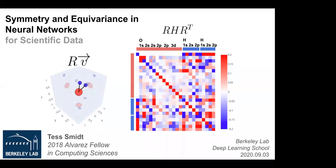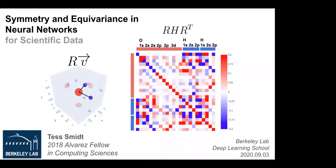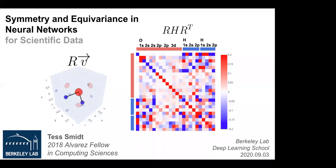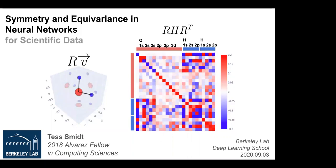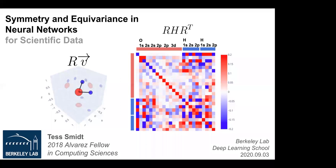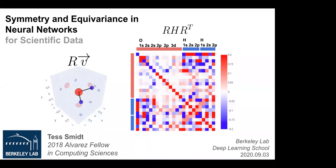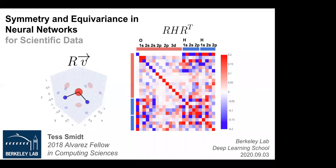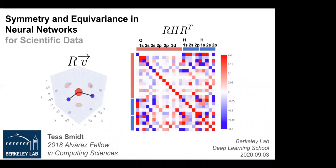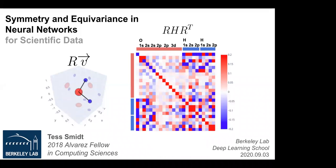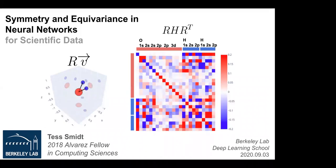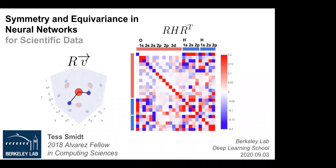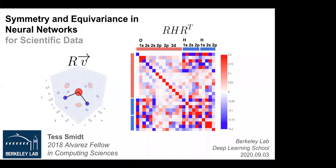Tess Smet is the 2018 Alvarez Postdoctoral Fellow in the Computing Sciences here at Berkeley Lab. Her current research interests include building neural networks from first principles for rich data types and accelerating existing techniques and creating new capabilities for computational chemistry and material science. Tess earned her PhD in physics from UC Berkeley in 2018. As a graduate student, she used quantum mechanical calculations to understand and systematically design the geometry and corresponding electronic properties of atomic systems.